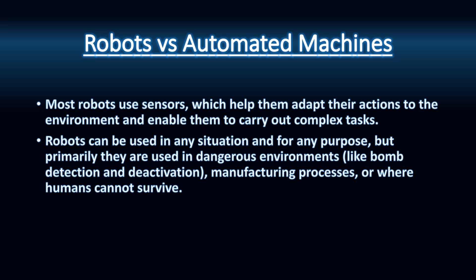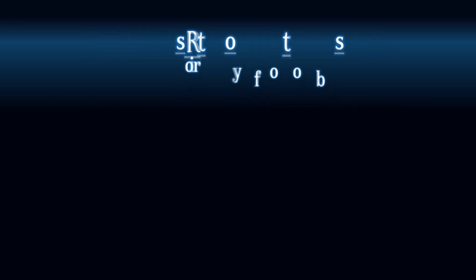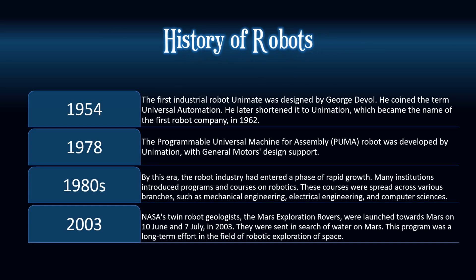Sensors enable robots to carry out complex tasks. Robots are primarily used in dangerous environments. In 1954, the first industrial robot, Unimate, was designed by George Devol. In 1978, the PUMA robot was developed by Unimation.